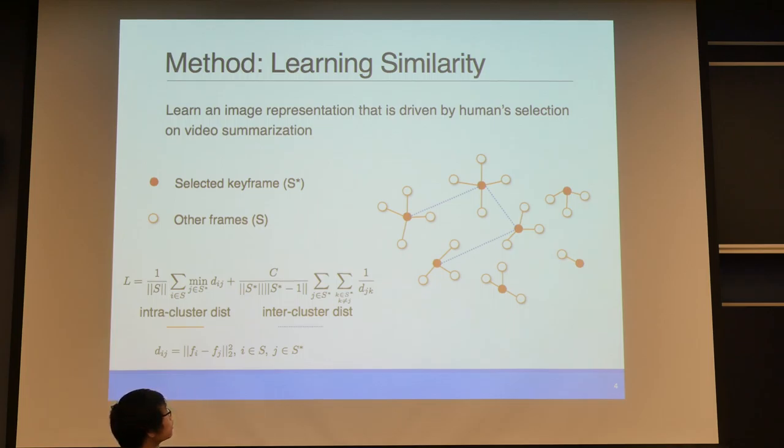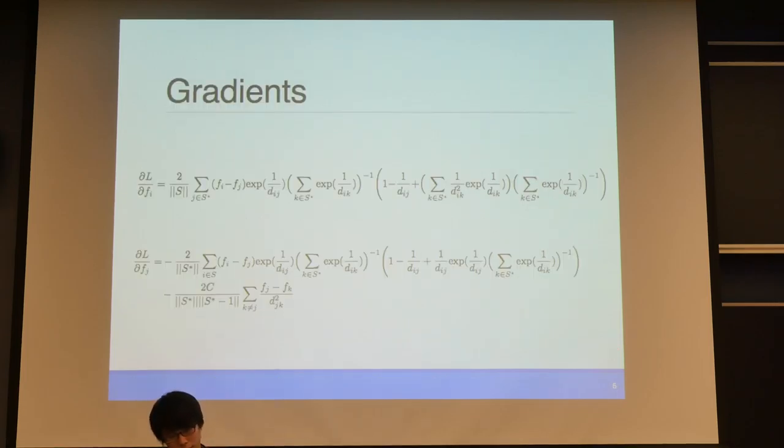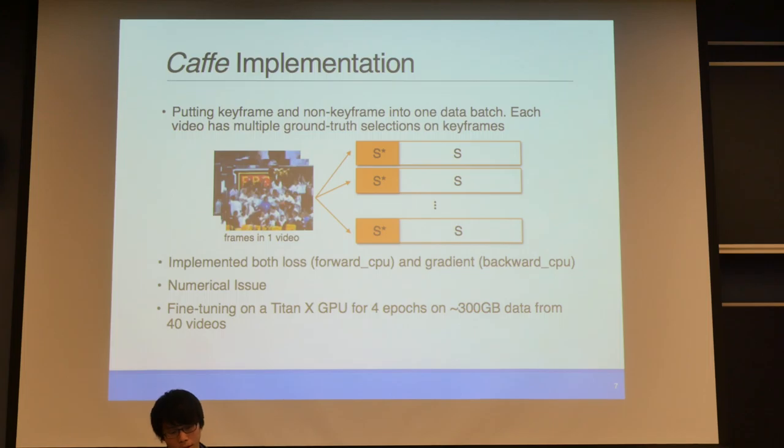image representation directly from humans' keyframe selection. Each point here is a video frame and the solid ones are selected keyframes. We want to learn a feature space that can simultaneously decrease the intra-cluster distance and increase the inter-cluster distance. So we have this loss function to minimize two terms here. To minimize this loss function, we are fine tuning deep neural networks. We need this loss function to be differentiable.